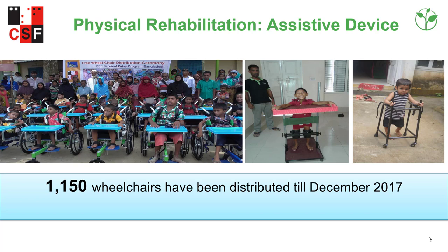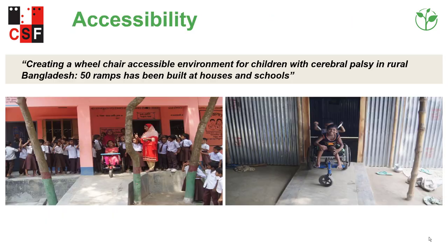Slides showing three photographs of a rally on World CP Day, children with wheelchairs, and therapeutic activities at the center. Images of children with different types of assistive devices, including wheelchairs, standing frames, and walkers. 1,150 wheelchairs have been distributed by this program.